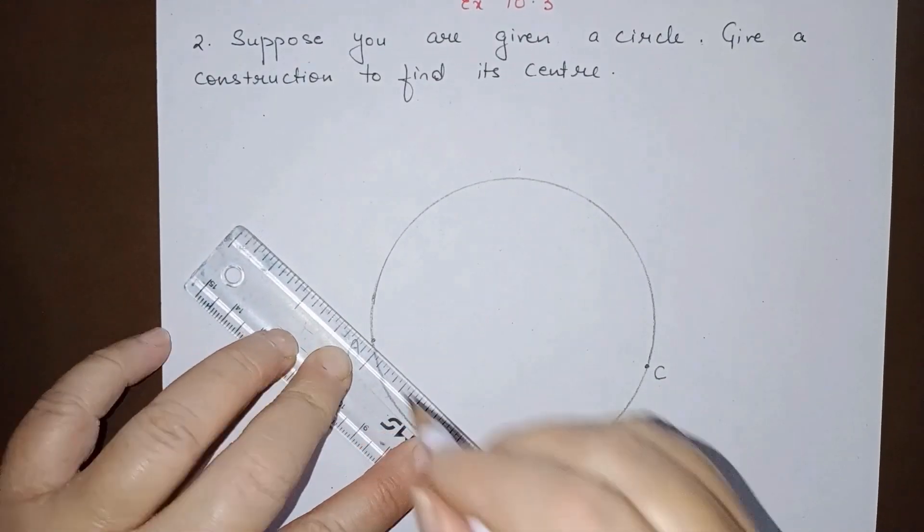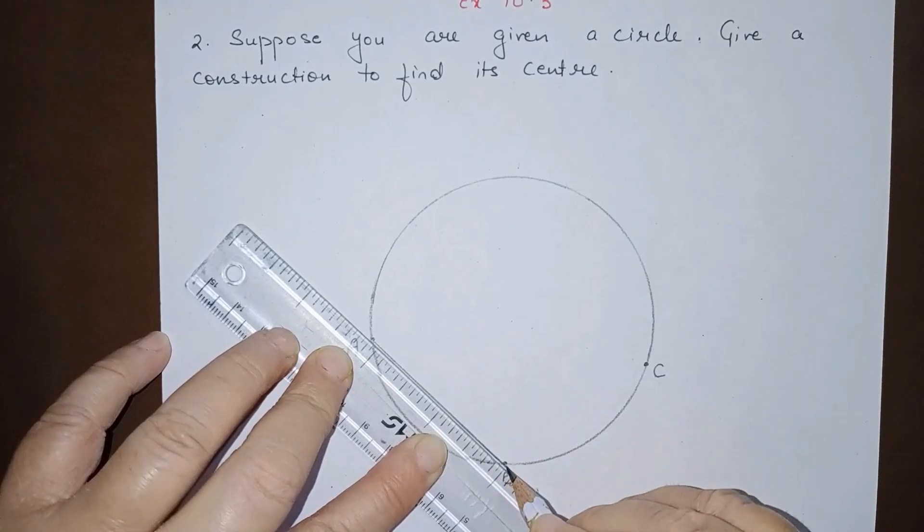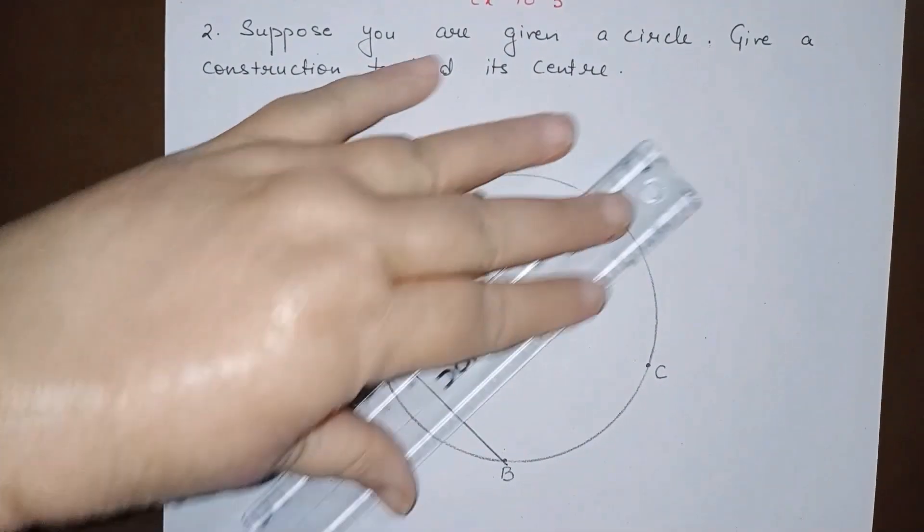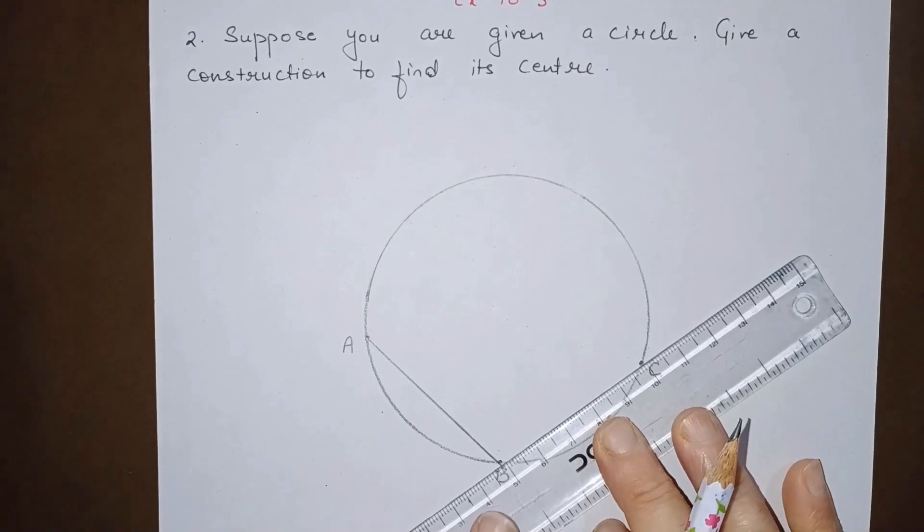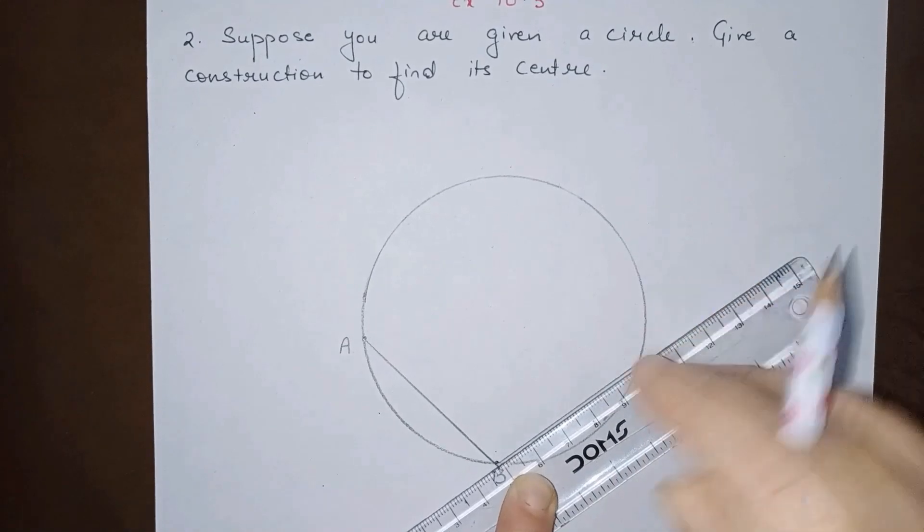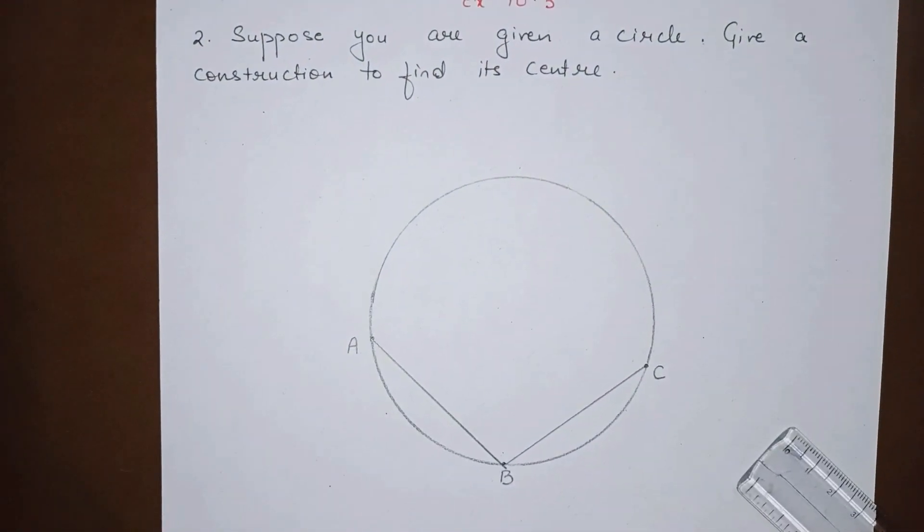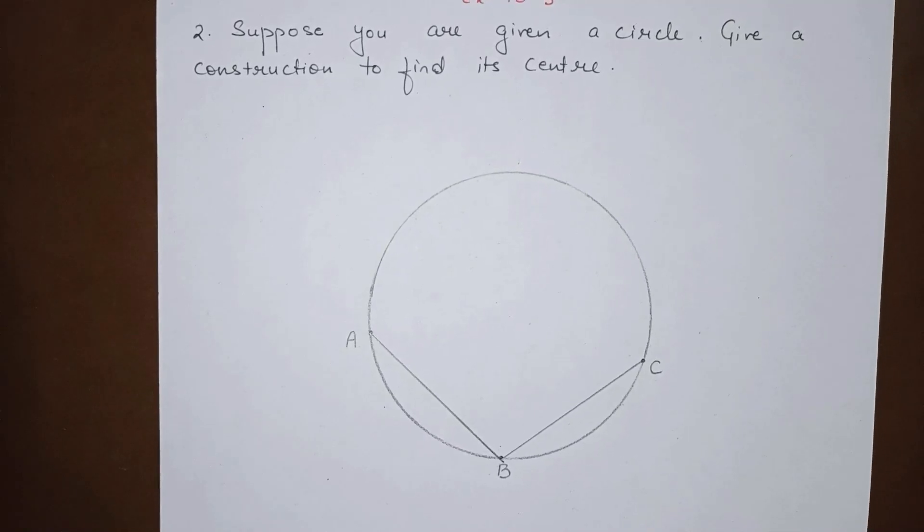Join AB so that chord AB is formed, join BC to make chord BC like this. We have taken 3 points, we have joined them and 2 chords are formed.